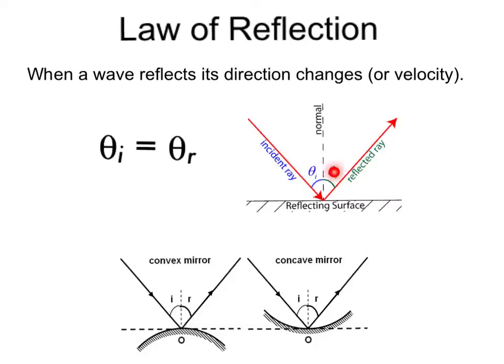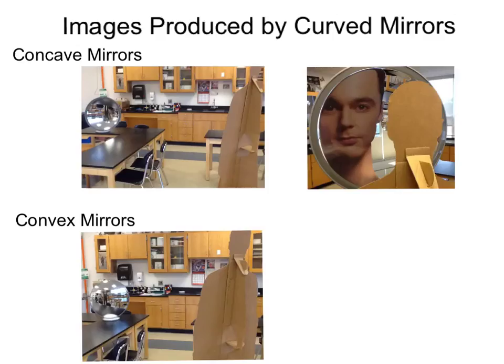The angle of reflection is measured from the reflected ray to the normal line. For convex and concave curved mirrors, recall in class we needed to draw a tangent line first, to then draw in the normal line perpendicular to it, and we can measure those angles of incidence and reflection as well.